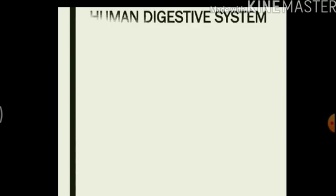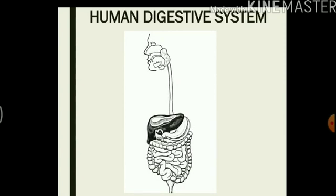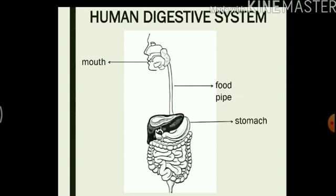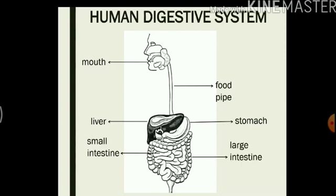Let us have a look at the digestive system in our body. The different organs that are involved in this digestive system are: mouth, where the digestion starts; next we have the food pipe; below that we have the stomach; beside the stomach we have the liver; below that we have the small intestine and the large intestine; below that we have the rectum; and finally the anus. All these organs work together to help us digest our food.